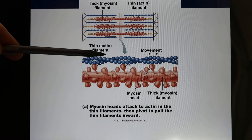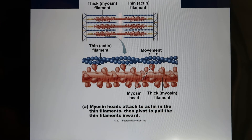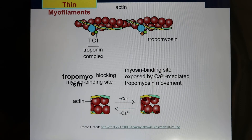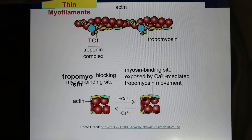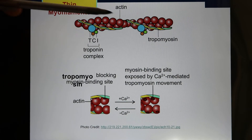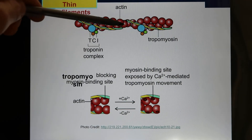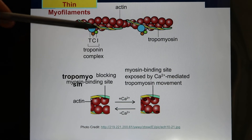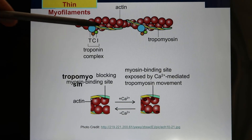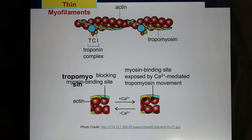The thin filaments are made of actin, and the thick filaments are made of myosin. In the thin filaments, there is more structure — they have tropomyosin. Tropomyosin is the protein that blocks the binding site of actin.